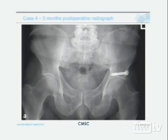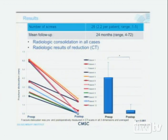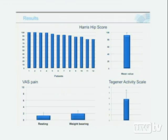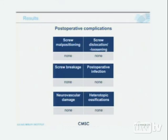The mean follow-up of all cases is 24 months, ranging from 4 to 72 months. Fracture dislocation was measured in CT scans in all three dimensions preoperatively and postoperatively, showing a significant reduction postoperatively. Harris Hip Score mean values are approximately 90. VAS pain scores and Tegner Activity Scale scores are favorable, with one patient at level 6 being very active. There were no postoperative complications, no screw dislocation or malpositioning.